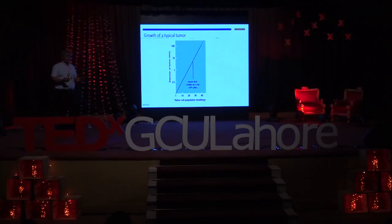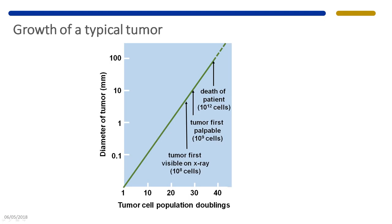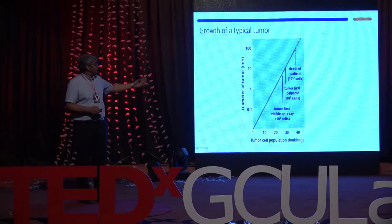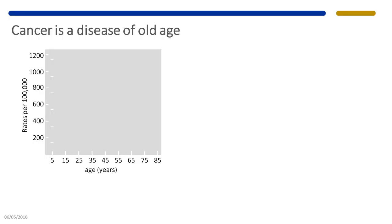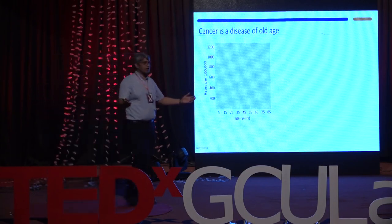When a tumor becomes palpable — about one centimeter in diameter — it contains around one billion cells. This didn't happen overnight; it happened over many different years. By the time a patient dies, the tumor may contain as many as one trillion cells. Because cancer takes many years to develop, it's like a car: you buy a new car with no defects, but after running it for ten years, defects accumulate.